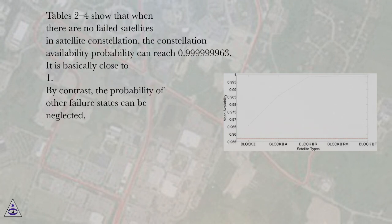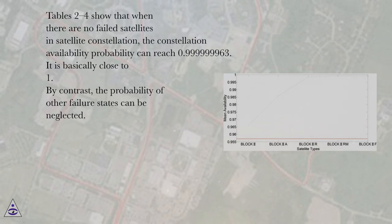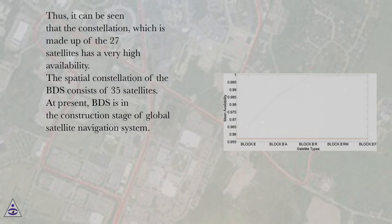Tables 2 to 4 further confirm that when there are no failed satellites, the constellation availability probability can reach 0.9999999963, essentially close to 1. The probability of other failure states can be neglected. Thus, the constellation made up of 27 satellites has a very high availability.